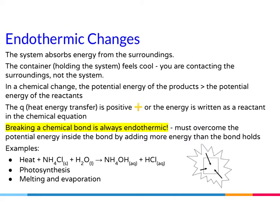Let's focus on endothermic changes. The system absorbs energy from the surroundings. The system is what we're looking at as a scientist — it could be an object or a reaction. You are touching the surroundings, not the system. Therefore, that system is absorbing your energy and that is why it feels cold. In a chemical change, the potential energy of the products is greater than the potential energy of the reactants. The variable Q, which is the heat energy transfer, is positive, or the energy is written as a reactant in the chemical reaction.